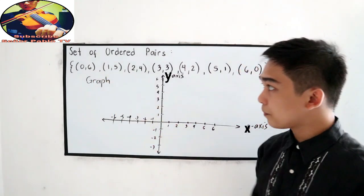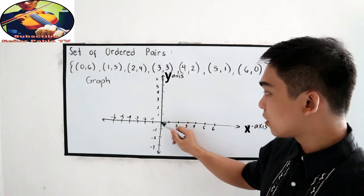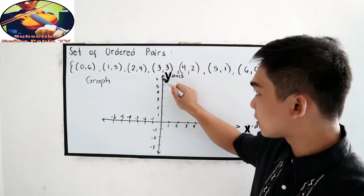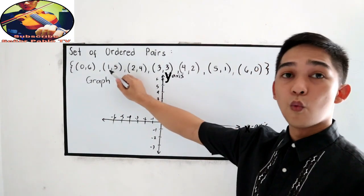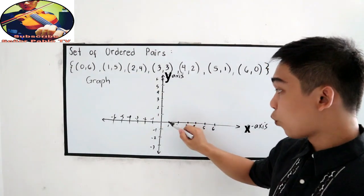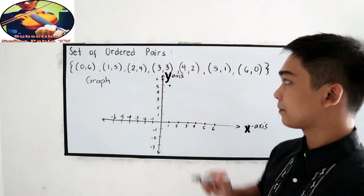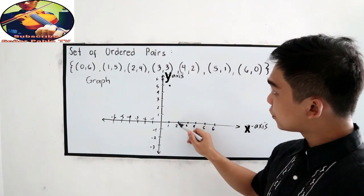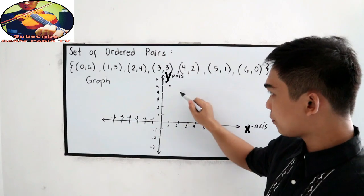So, 0,6. X is 0, then Y passing 6. So, 0 going to 6. Next, 1,5. So, 1 going up to 5. Next, 2,4, 2 going to 4.